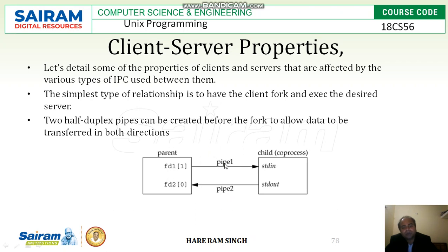When a pipe is created, it returns two file descriptors: file descriptor zero and file descriptor one. If the client wants to write data to the child, it will write the data into the pipe using file descriptor one. The child, that is the server, will use standard input to read the data from the parent process. Similarly, if the server wants to send some data to the client, using pipe two, it will read the data from stdout and send it to file descriptor zero.